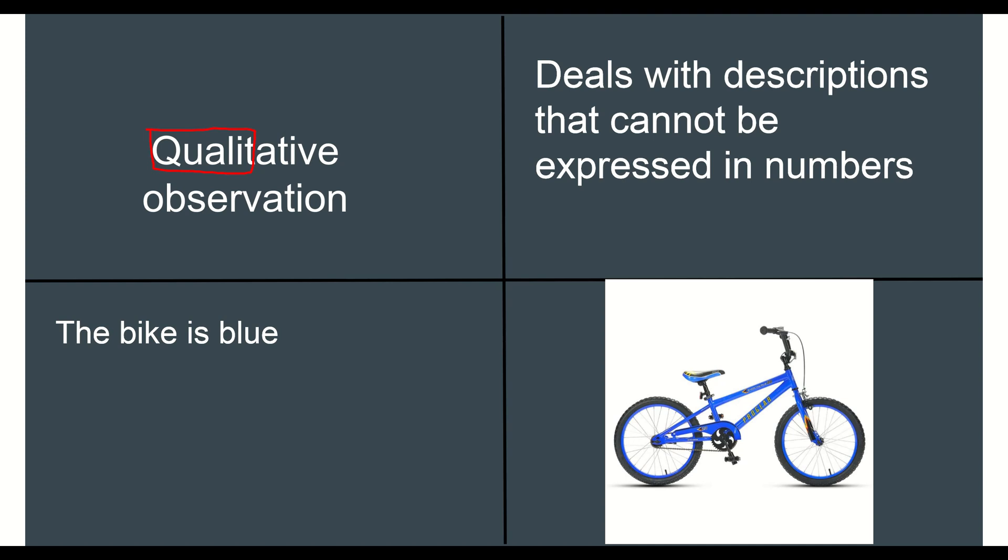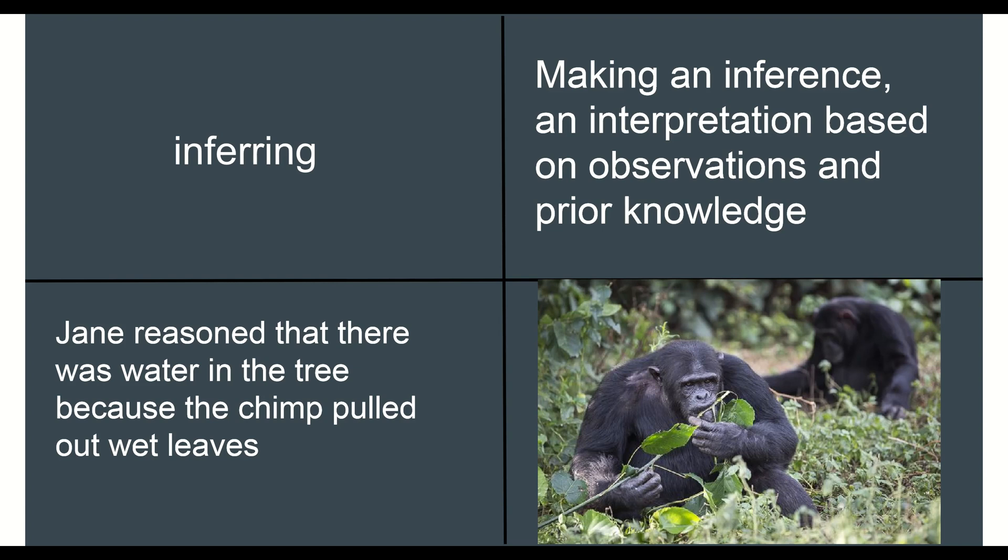Moving right along, we have inferring. Sometimes you'll hear me say inferences or just infer, all are really the same type of word. Making an inference is an interpretation based on observations and prior knowledge. It's not the same as a prediction, which we'll talk about. Jane reasoned that there was water in the tree because the chimp pulled out wet leaves. She was able to infer that because the leaves were wet, there was water on them, and the chimp was getting water from those leaves.